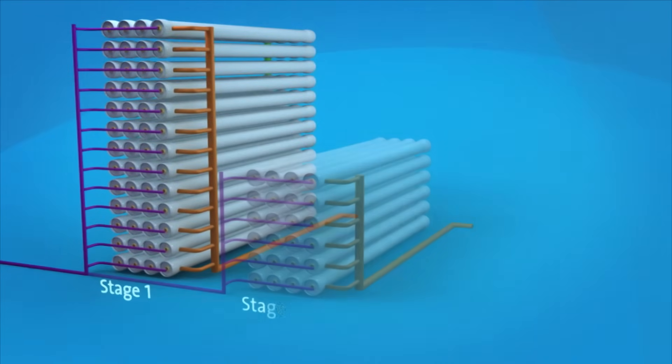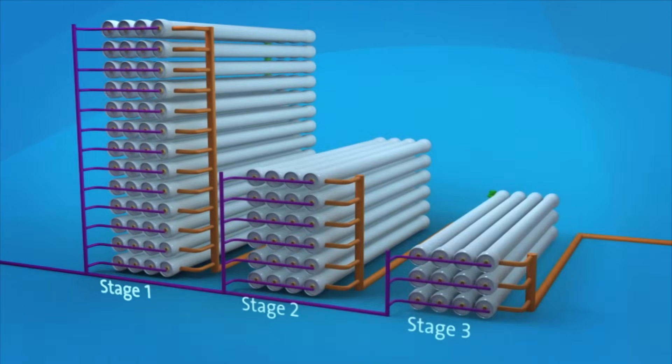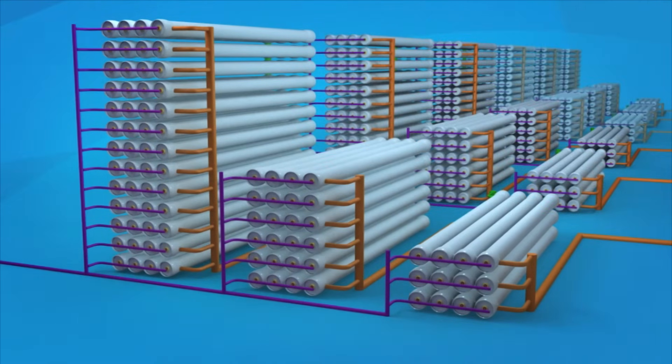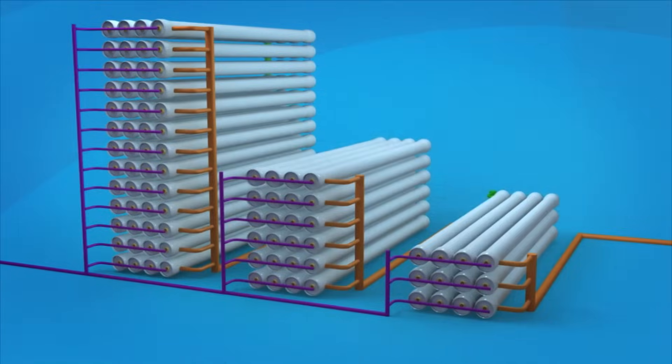At St. Mary's, there are six reverse osmosis treatment trains, each with three stages. This design produces the highest amount of recycled water with reduced concentrate waste.